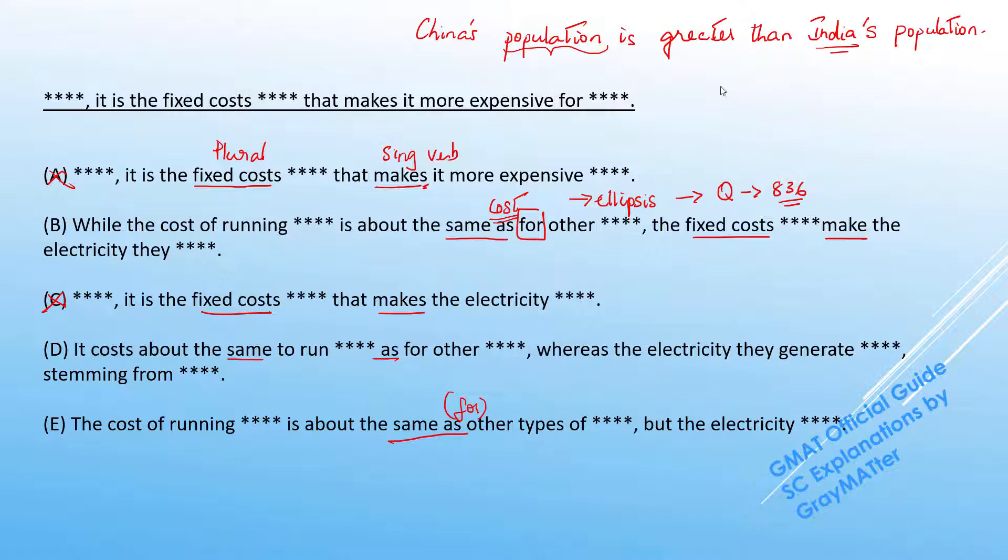Simply put, if I rephrase this sentence as China's population is greater than India's, it would still make logical sense. I don't have to say the word population again, because when I write it as India's, the word population gets implied. So in the same way, when we insert the preposition here, it is implied that it is the cost for the other plans. So the cost of running these plans is about the same as the cost for the other plans. And that makes logical sense, you can hold on to that.